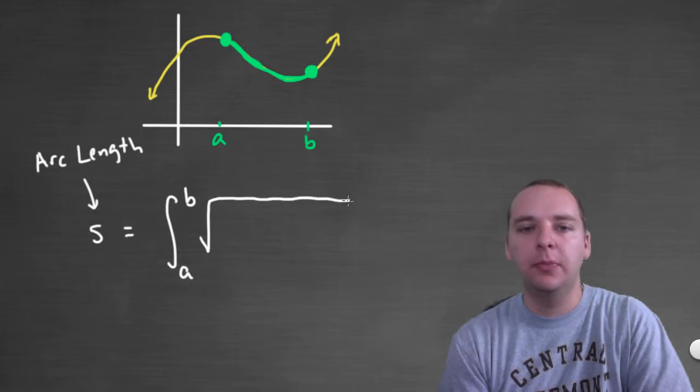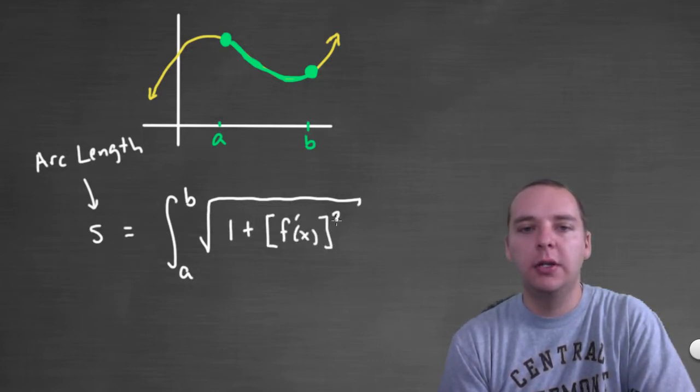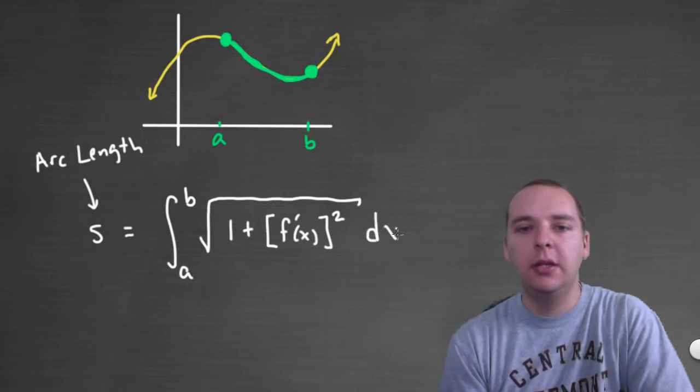It's a big square root, big square root of one plus bracket f prime of x quantity squared dx.